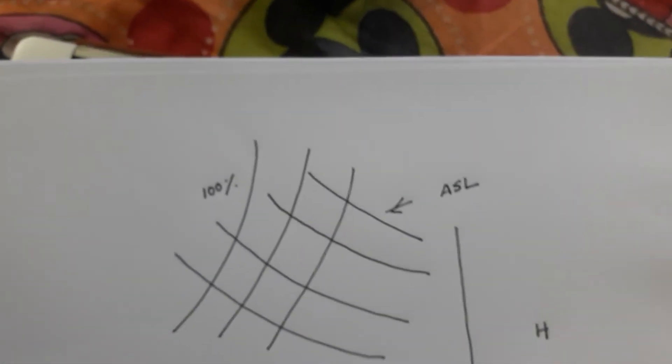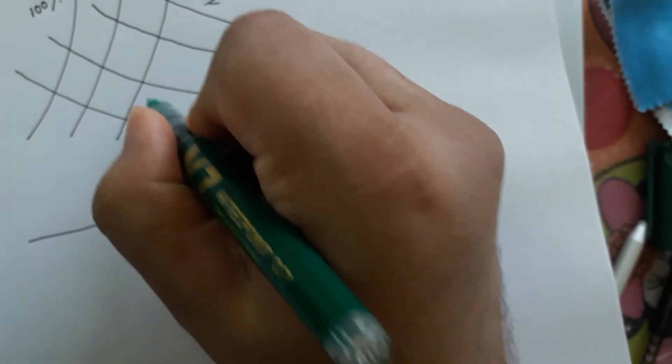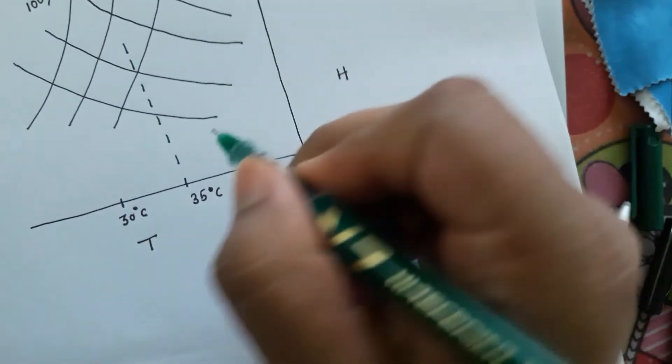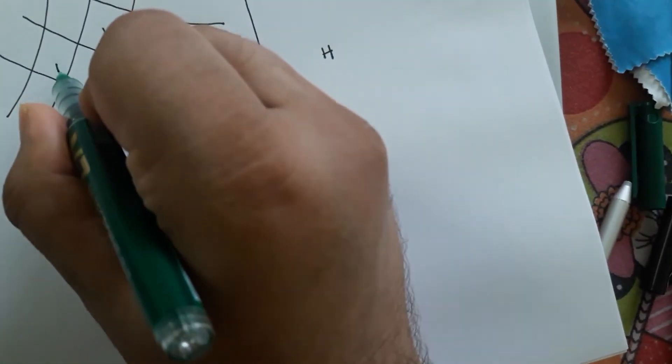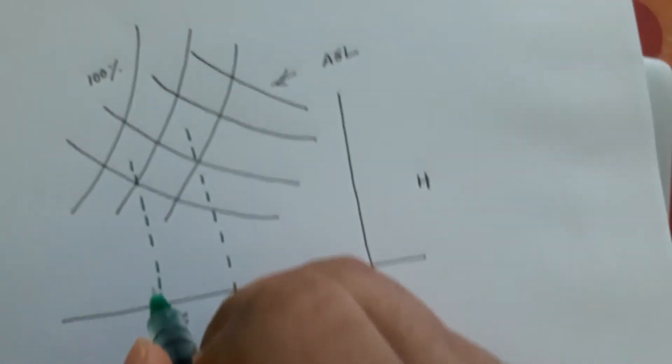So what you have to do, it's very simple. You draw a vertical line from your dry bulb temperature and then you draw another vertical line from the wet bulb temperature.